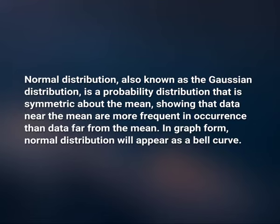In graph form, normal distribution will appear as a bell curve. One more way of defining the normal distribution is that it is a continuous probability distribution that is symmetrically distributed around its mean. Most of the observations cluster around the central peak, and the probabilities for values further away from the mean taper off equally in both directions. Extreme values in both tails of the distribution are similarly unlikely.